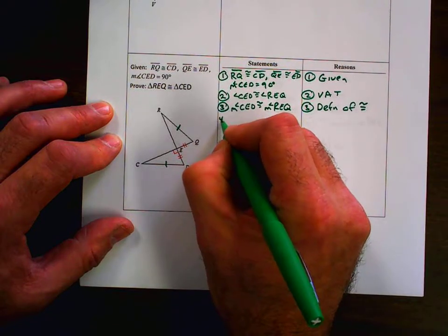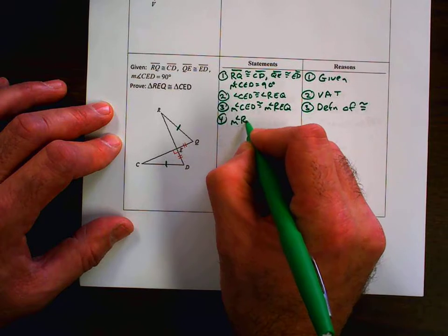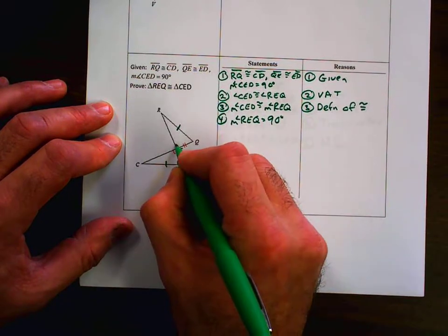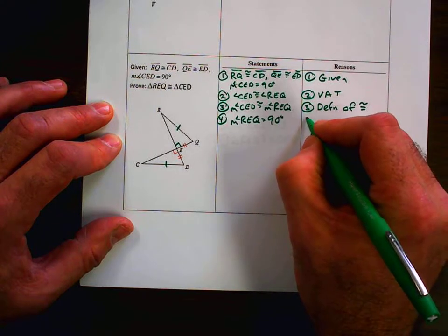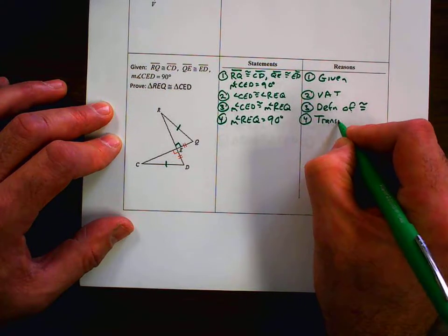And I go on to say now that the measure of angle REQ equals 90 degrees. I can mark it there, and I can go ahead and say that's true by transitive property of equality.